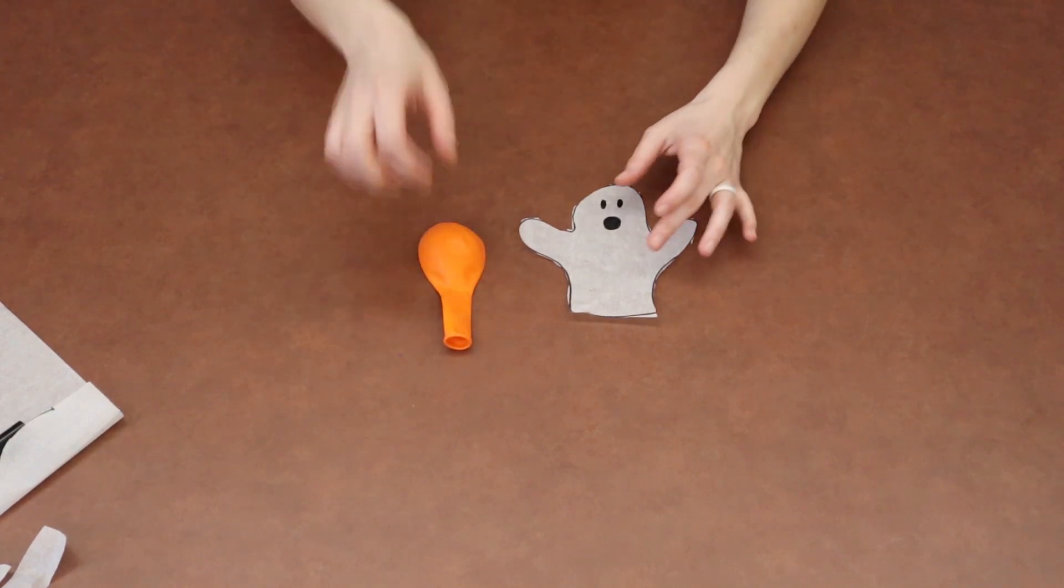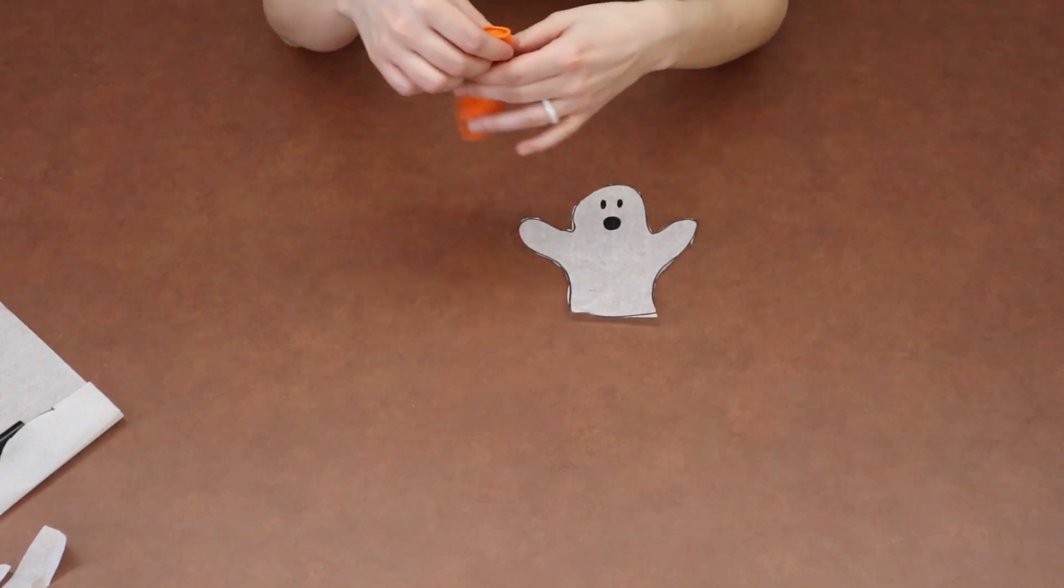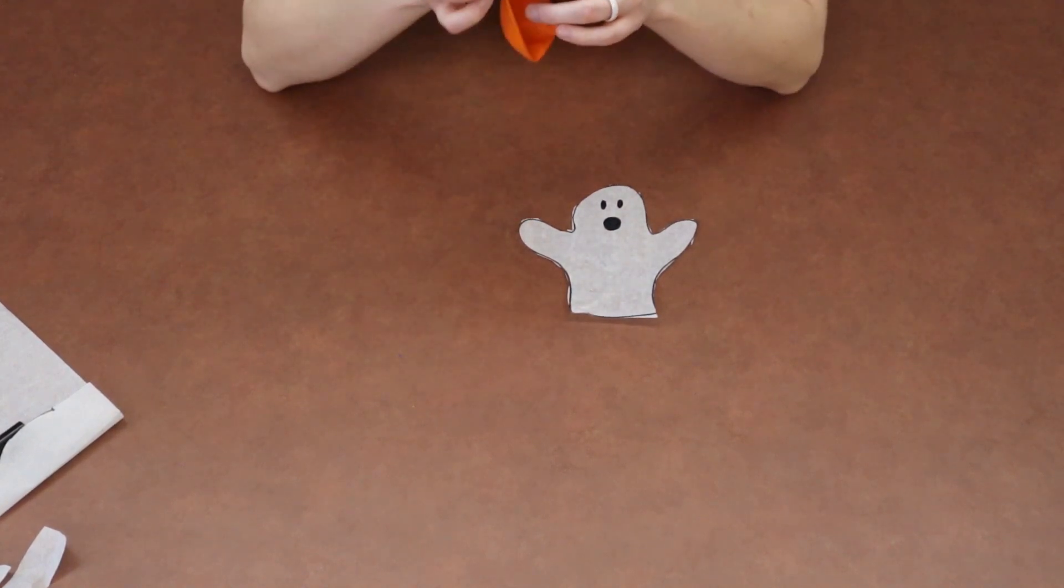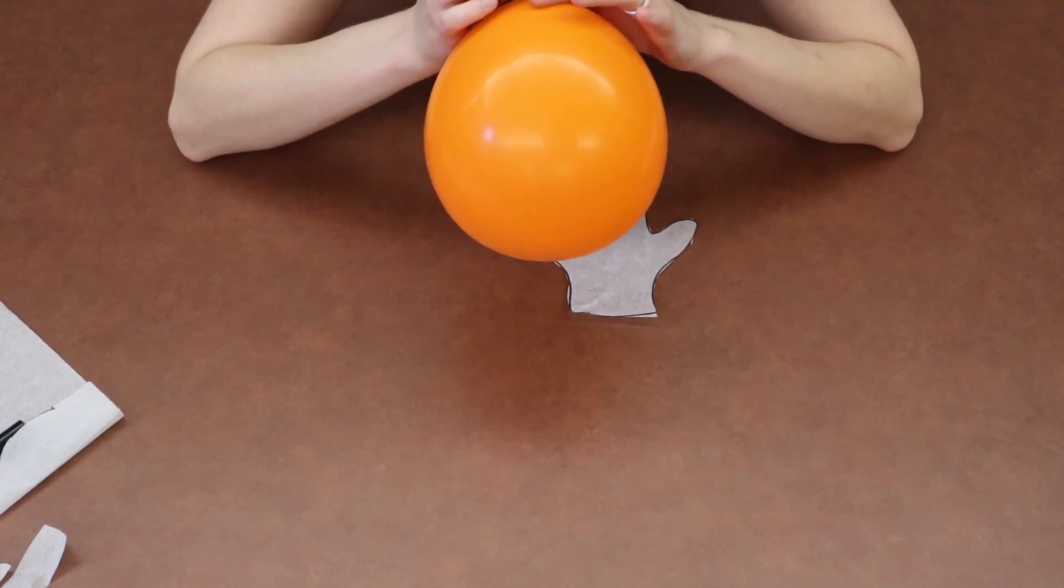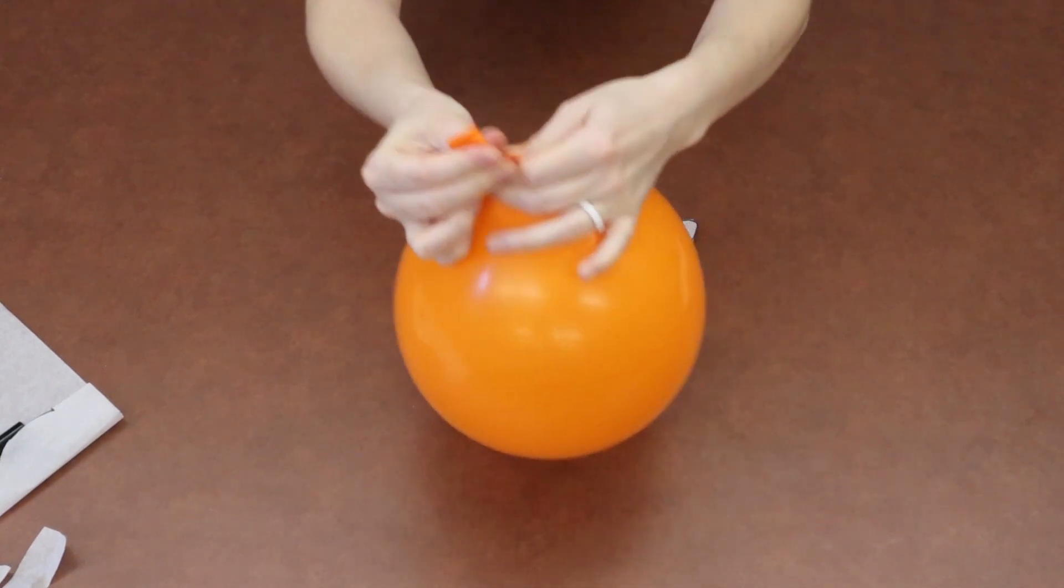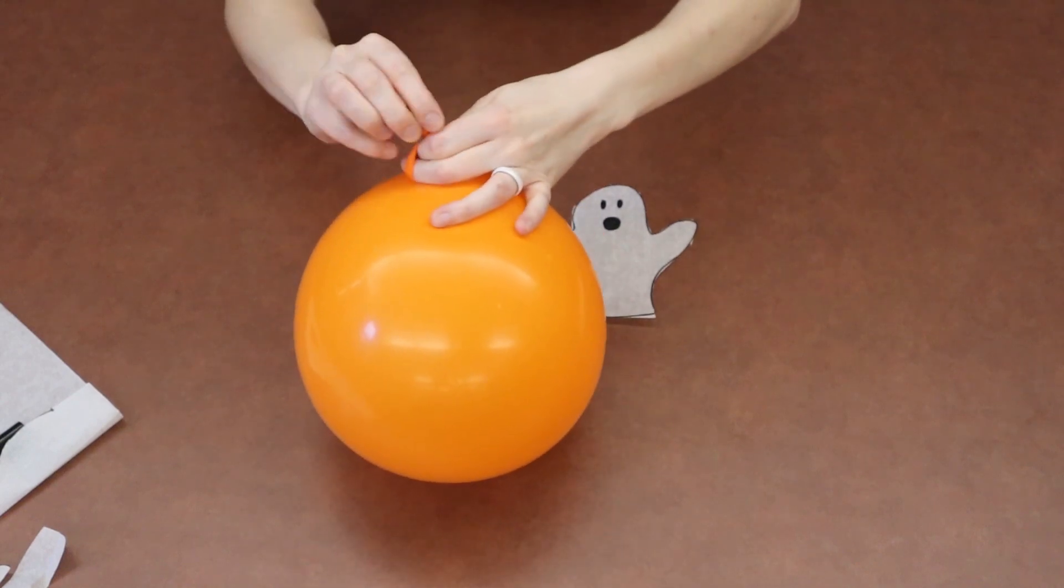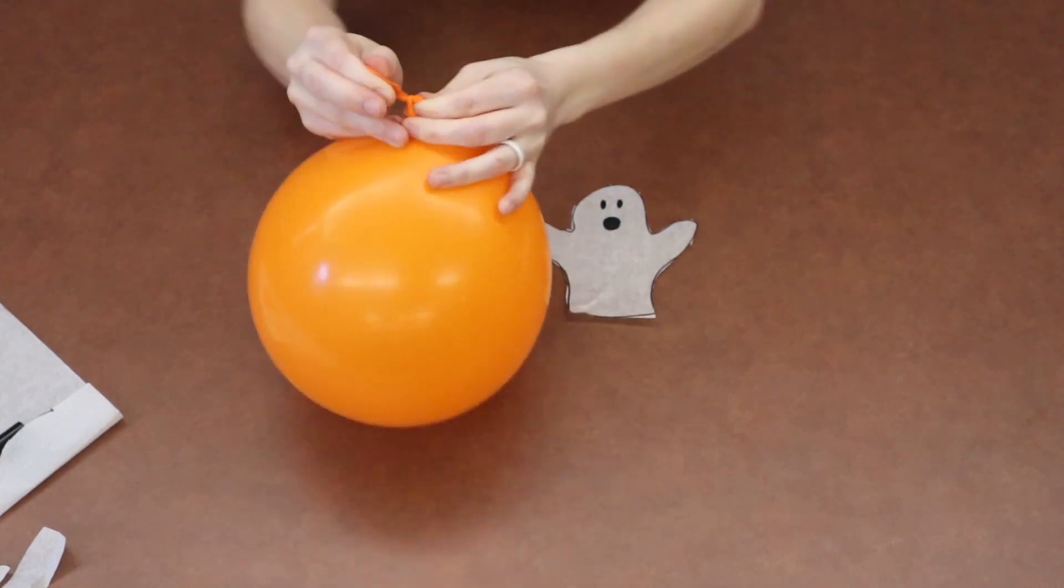And I am now going to grab one of the orange balloons. And caregivers, what I would like you to do is go ahead and blow up that balloon for your little one and then tie it off. Okay, so here we go. So that's about as big as I want my balloon today. And then I'm just going to work to tie it off.